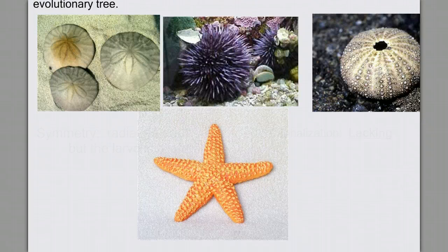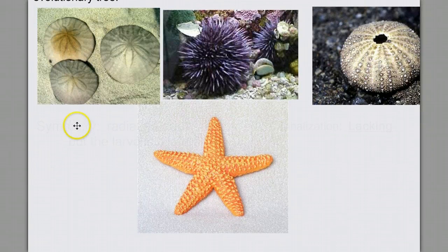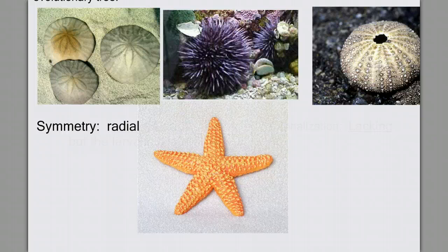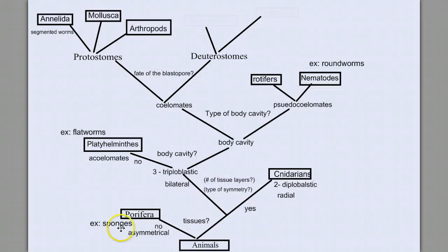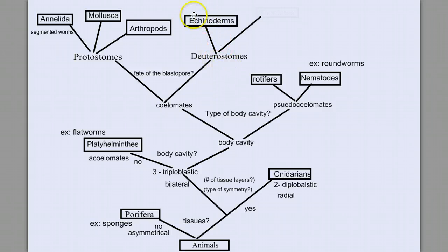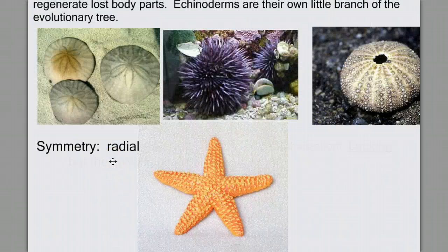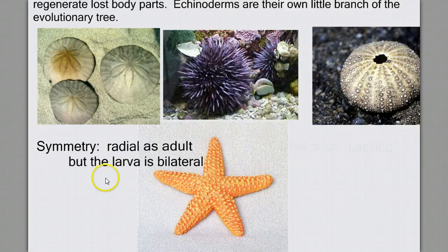The first thing we should notice about the echinoderms is they seem fairly simple — they exhibit radial symmetry. Previously, we've noted radial symmetry as being a primitive feature. In our travels through the animal kingdom, we left radial symmetry behind way back with the Cnidarians, but here we see it has evolved again in the echinoderms. However, if we investigate a bit more, we see that this radial symmetry is only present in the adult form. During the larval stages of development, the echinoderms exhibit bilateral symmetry, which indicates that they evolved from a bilateral ancestor.